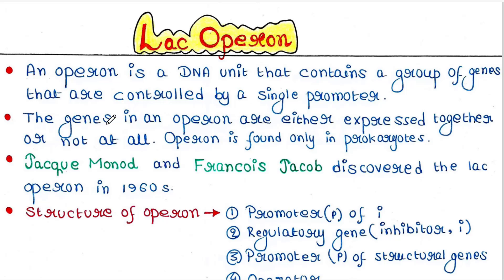This is a unique feature of prokaryotes only. The genes in an operon are either expressed together or not expressed at all. Operon is found only in prokaryotes. Jacques Monod and François Jacob discovered the lac operon in the 1960s.